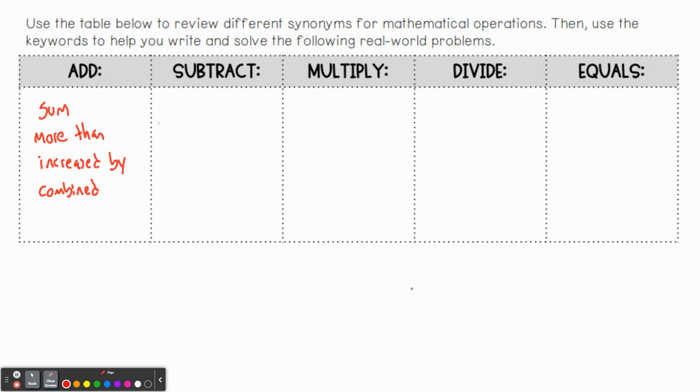Now let's talk about subtract. Well, if we have sum as one of them, then wouldn't difference be the other, right? So what's the difference? When we're talking about math, we're talking about subtraction. If we had more than for add, then the opposite is less than. So that's the nice thing about doing word association - we're doing opposites here. If one is increased by, the other one is decreased by. If one is combined, the other you could say a loss.